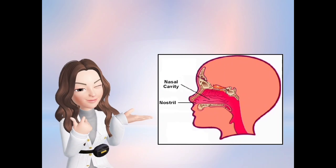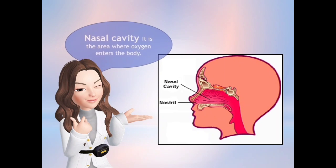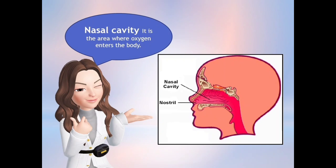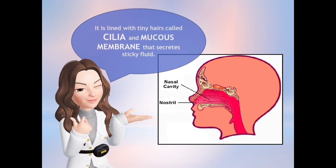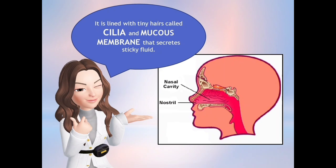Let us have first the nasal cavity. The nasal cavity is the area where oxygen enters the body. It is lined with tiny hairs called cilia and a mucous membrane that secretes sticky fluid.